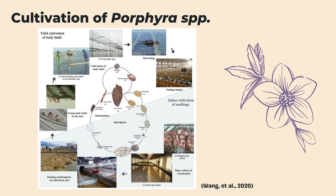The first part is the mass culture of conchocelis, by plain type or by hanging type culture. Then, seeding conchospores on cultivation nets is next, by dropping a solution comprising of 10% nitric acid, 95% alcohol, and 0.5% chromic acid. Massive conchospore release generally begins during late September or early October when water temperature decreases to about 23 degrees Celsius. Layers of cultivation nets are then placed in culture tanks with jet pumps for agitation of water to help non-motile conchospores attach to the nets.